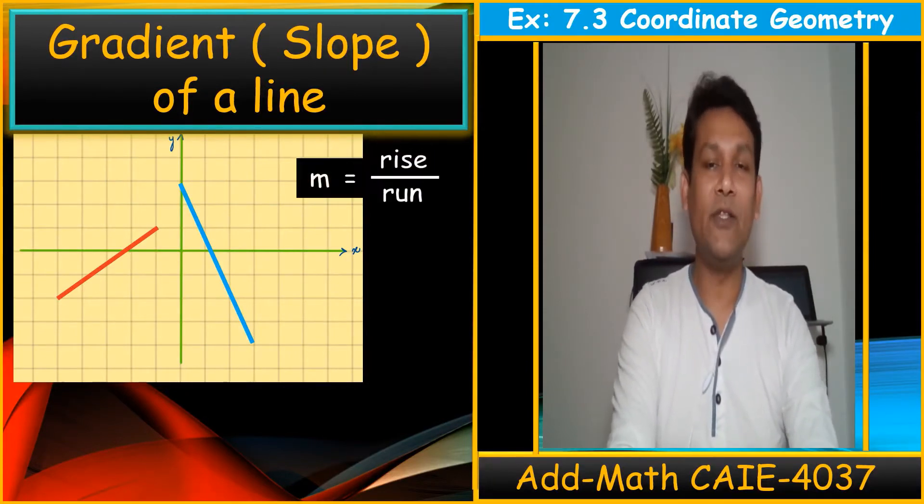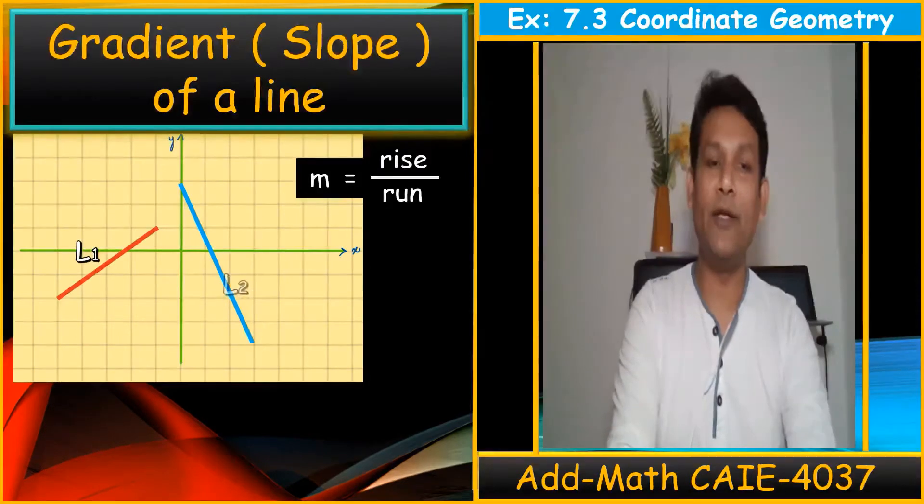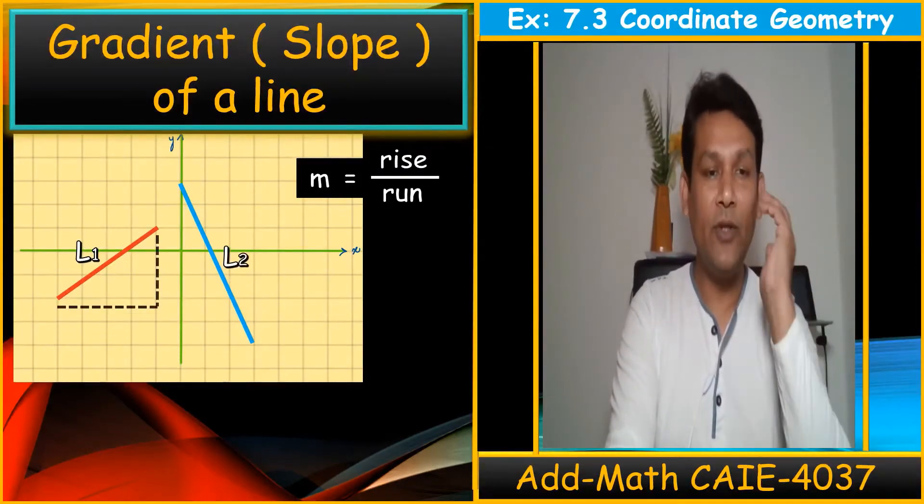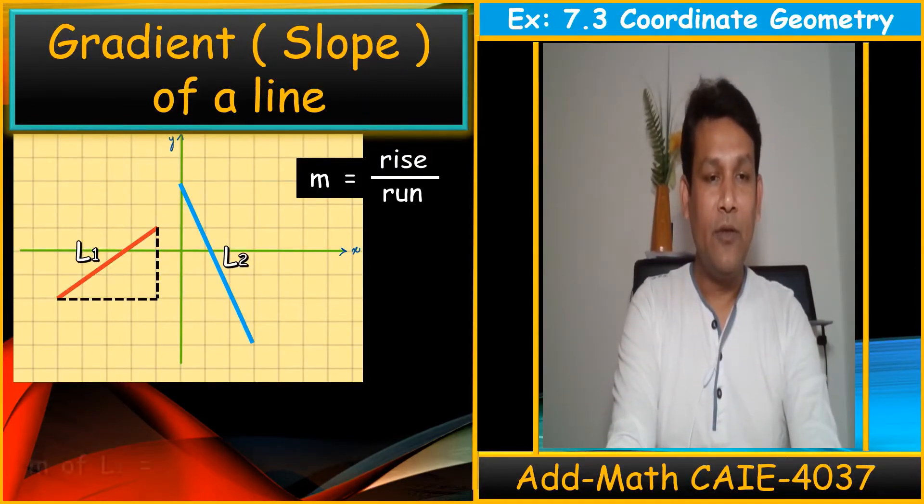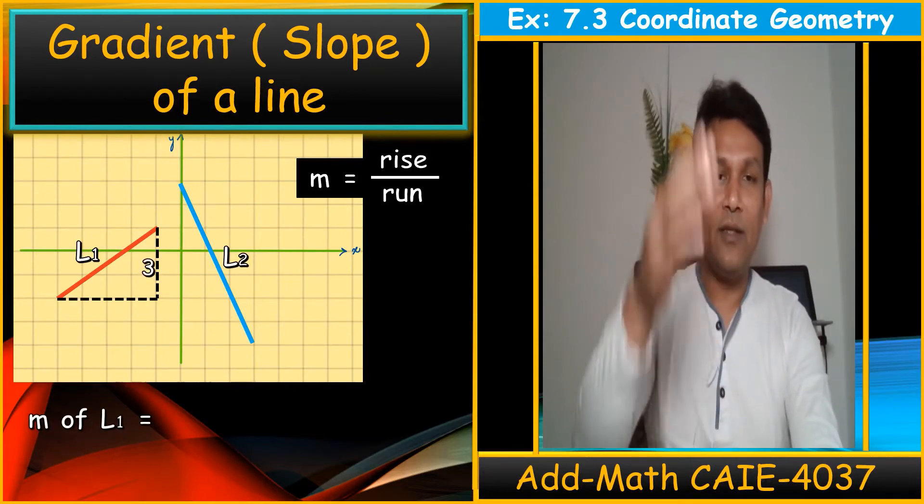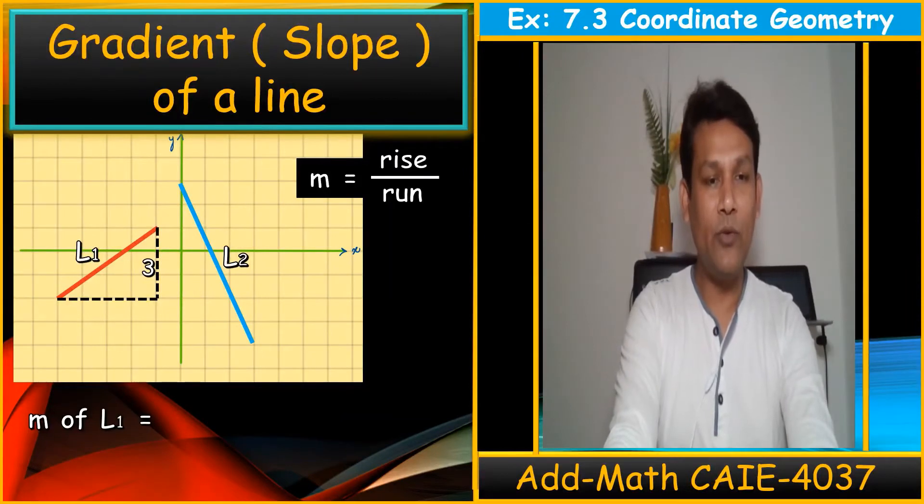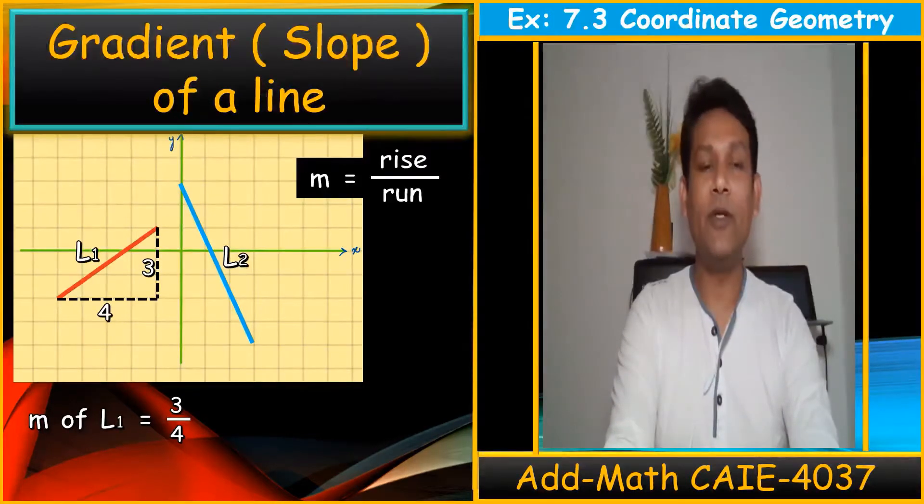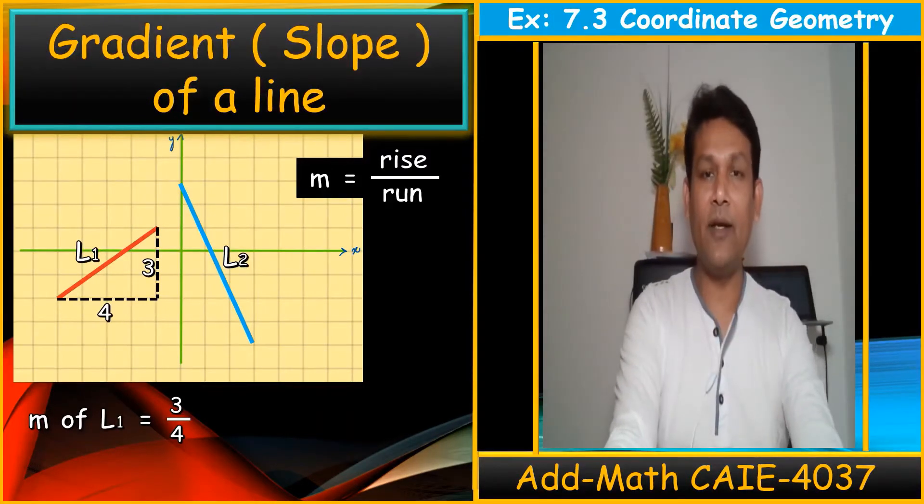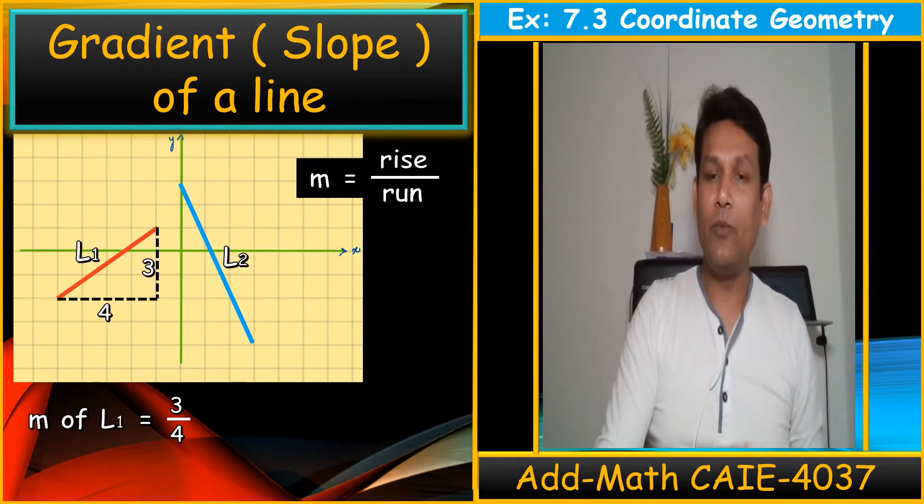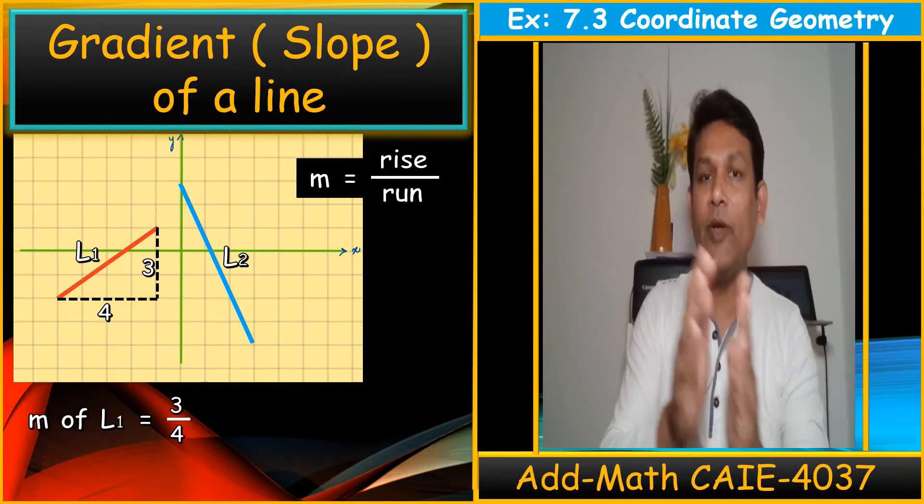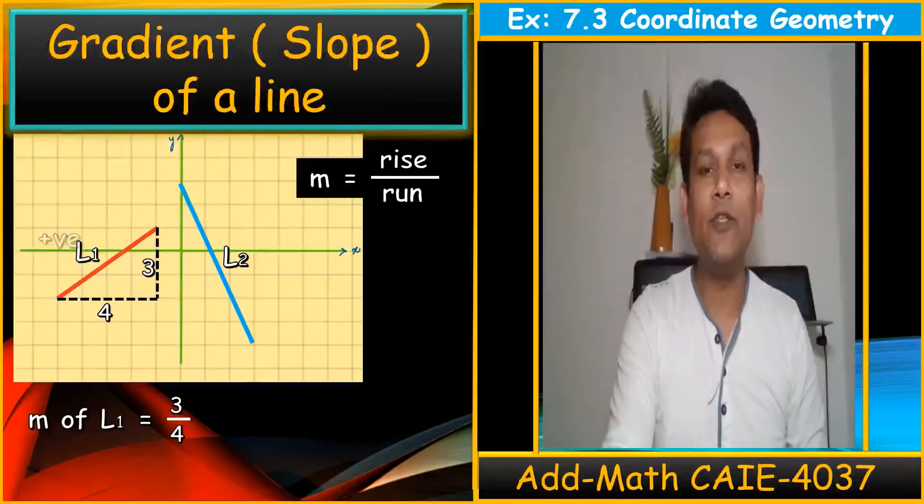We know the rise upon run is the formula and we are having line 1 and line 2. First of all, this line, the gradient of this line 1, you can see the rise is 3. Just count the steps and run is 1, 2, 3, 4. So the gradient is 3 upon 4, rise upon run. There is no problem. So whenever the line is like this, you can see the red line is coming from bottom, when we move from left to right is moving up. Gradient is always positive.